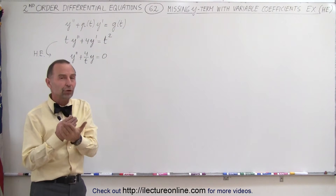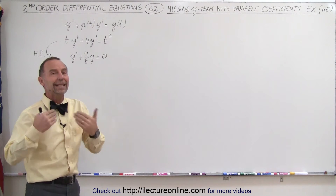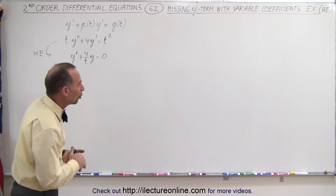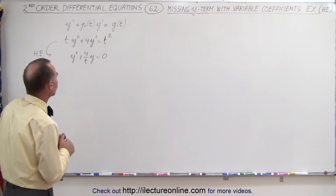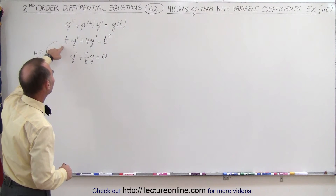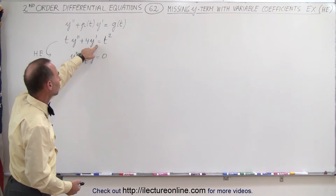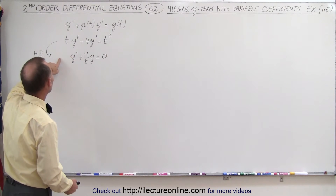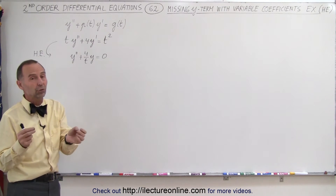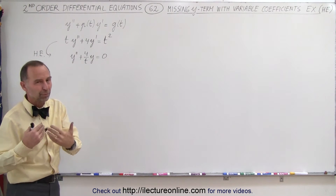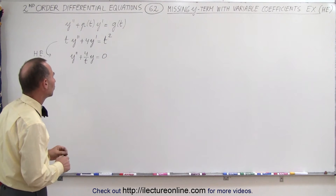In this example, we're first going to find the homogeneous part of the solution. In the next video we're going to find the non-homogeneous portion — the particular portion of the solution. So even though this is the original equation we're going to start with, and notice again the y term is missing, we're going to now only solve for the homogeneous portion. Remember that's usually the biggest challenge: to solve for this part of the solution.